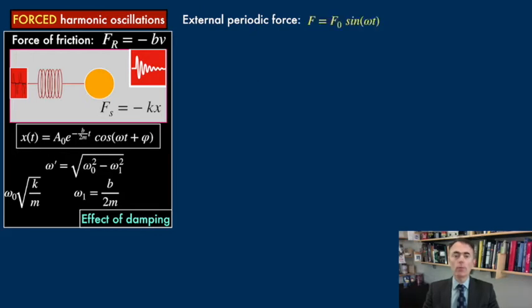Let's say F0 times the sine of omega t. Here F0 is the maximum magnitude of the applied external force, and omega is the frequency of the periodic force. This frequency is a generic frequency and has nothing to do with the natural frequency of the oscillator, omega0.